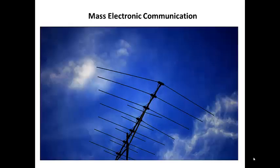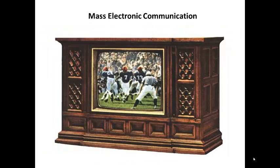1949 marked the birth of what would become cable television. Community Antenna Television, or CATV, delivered programming to households via coaxial cables in areas that did not have strong individual broadcast reception. In 1953, the first color television sets hit the market. The TV set became the centerpiece of many households, just as the radio had been a few short decades prior.